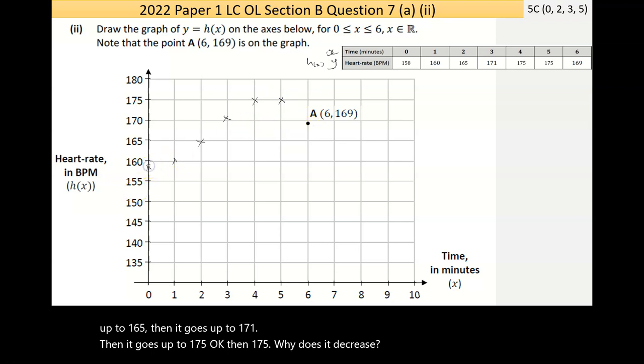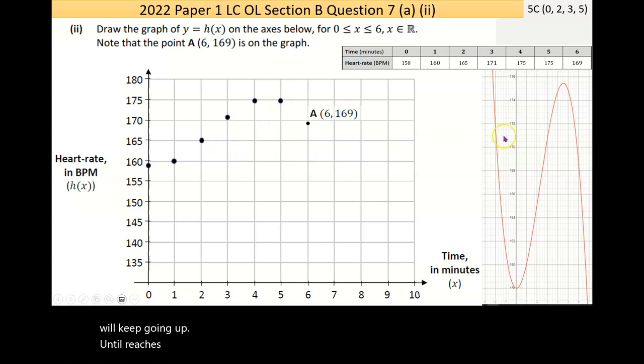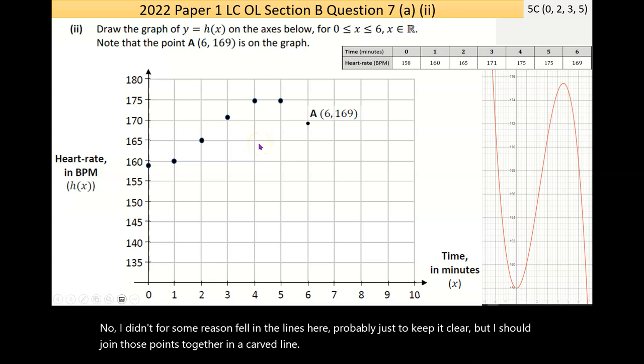Then it decreases. Why does it decrease? If I graph that, it's going to look something like this. The more you exercise, usually your heart rate will keep going up until it reaches max. I actually graphed it here in the notes, the actual equation. Between 0 and 6, it matches up with what we drew. I should join those points together in a curved line.